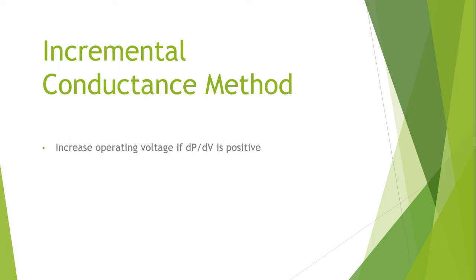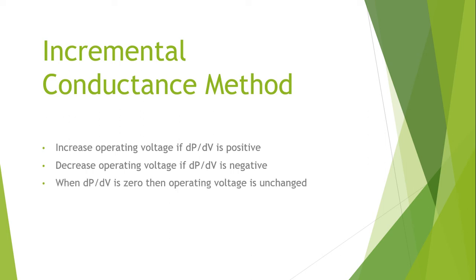In this method, we increase the operating voltage if the rate of change of power with respect to voltage is positive, and we decrease the operating voltage if the rate of change of power with respect to voltage is negative. The maximum power point is obtained when the derivative of power with respect to voltage is zero.